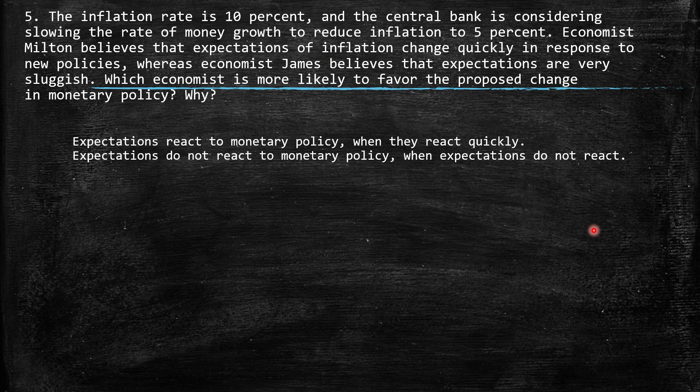The fifth question says: the inflation rate is 10% and the Central Bank is considering slowing the rate of money growth to reduce inflation to 5%. Economist Milton believes that expectations of inflation change quickly in response to new policies, whereas economist James believes that expectations are very sluggish. Which economist is more likely to favor the proposed change in monetary policy? Why?